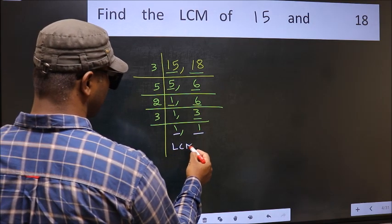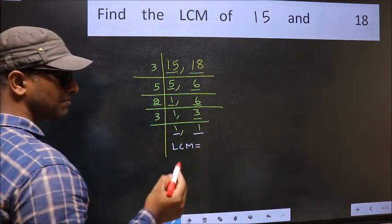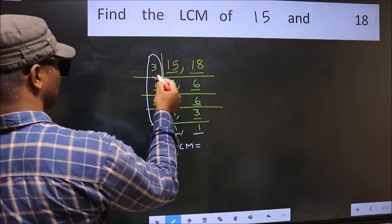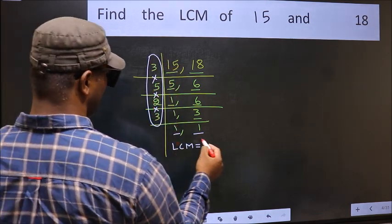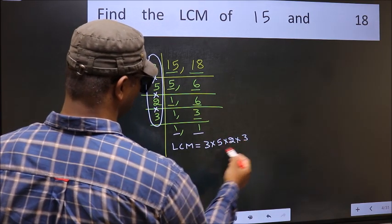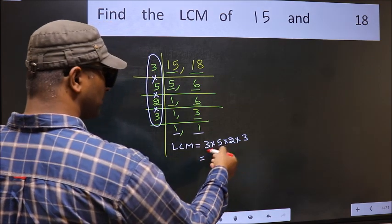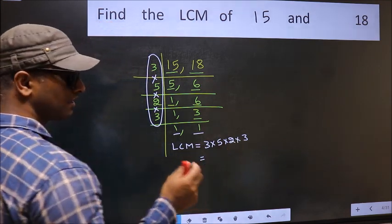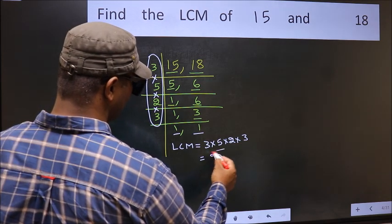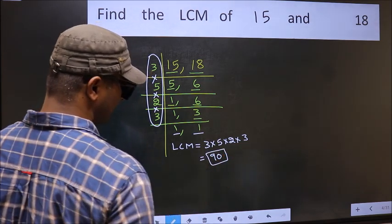So our LCM is the product of these numbers. That is 3 into 5, into 2, into 3. When we multiply these numbers, we get 90 is our LCM.